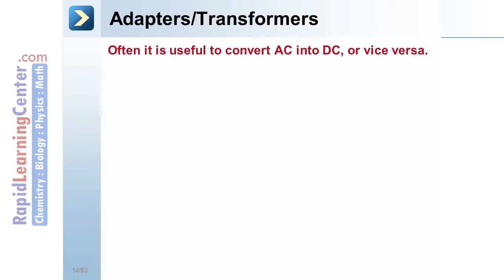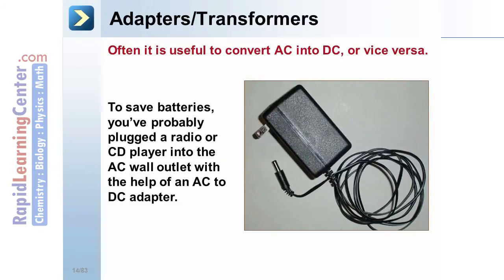Adapters, or transformers. Often, it's useful to convert AC into DC or vice versa. You've probably used a device such as this. To save batteries, this would be plugged into a radio or CD player, for example, and then into the AC wall outlet. This converts AC current into DC current to run your appliance.